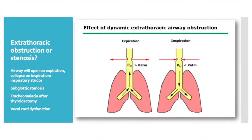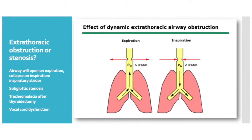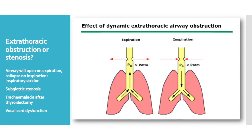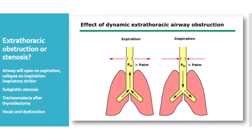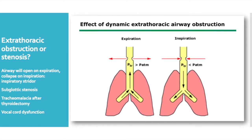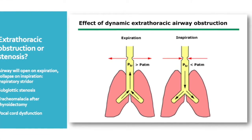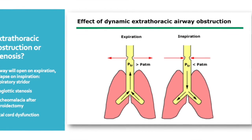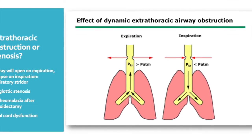Conversely, when there is obstruction or narrowing above the level of the thorax — in an extrathoracic location — the airway will tend to collapse with inspiration, causing inspiratory stridor, and open with expiration. This can be caused by subglottic stenosis or tracheal malacia following thyroidectomy for a long-standing goiter, or by dysfunction at the level of the vocal cords themselves.